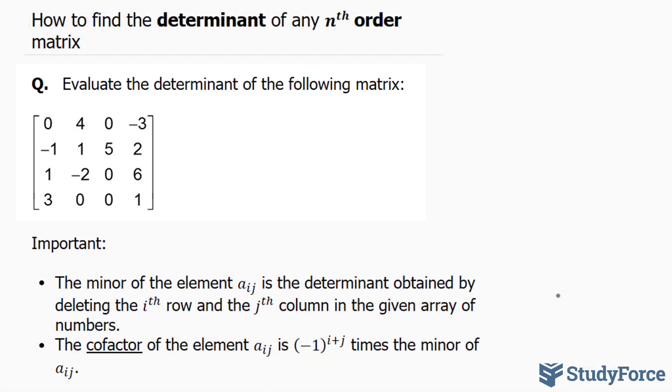Notice that our matrix is 4 by 4, and we're looking for the determinant. So far, we know how to find the determinant of a 2 by 2, a 3 by 3, but now we're looking at a 4 by 4.